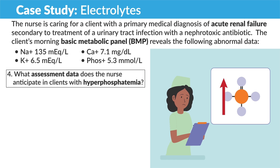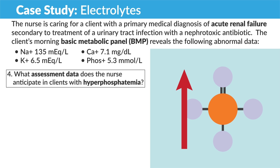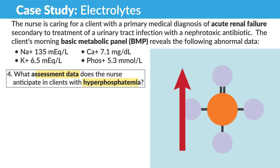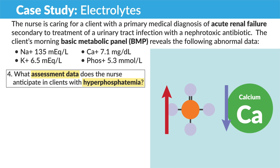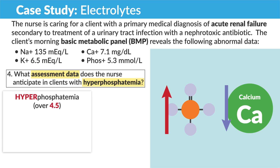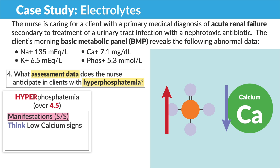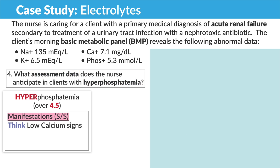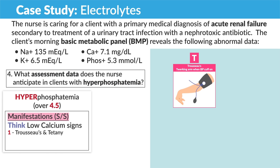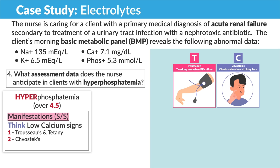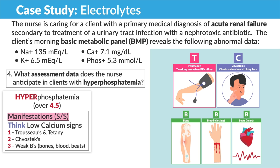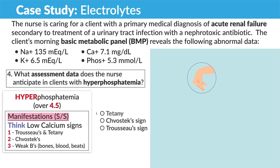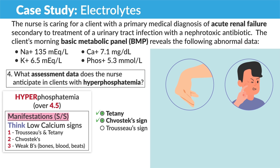Before looking at the answer options, look at the key terms. Hyperphosphatemia is that high phosphate. Always consider what you know about phosphate — it and calcium work in an inverse relationship. So with high phosphate, think low calcium signs and symptoms. The top three signs and symptoms are Trousseau's, tetany, and Chvostek's, as well as weak B's — weak bones, blood, and beats. So the correct options are tetany, Chvostek's, and Trousseau's — that arm twitch with the blood pressure cuff on.